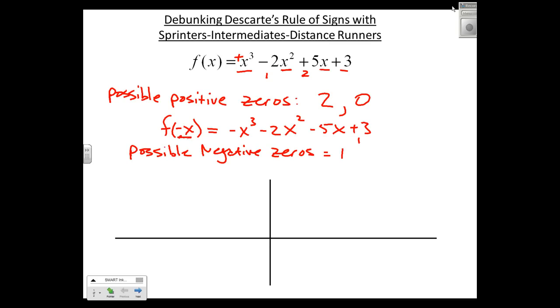Okay, so where's the debunking? It's a pretty easy rule to apply. But let's talk about this in terms of what we've done with sprinters, intermediate runners, and distance runners.